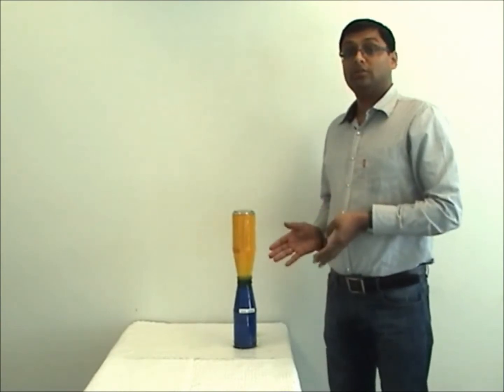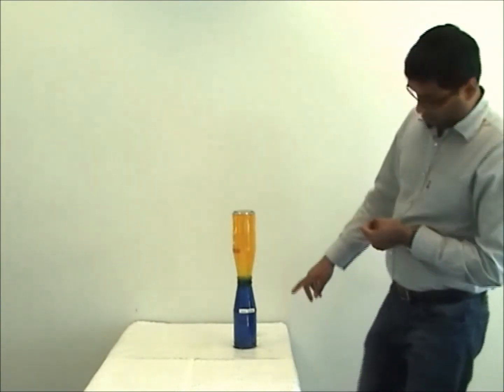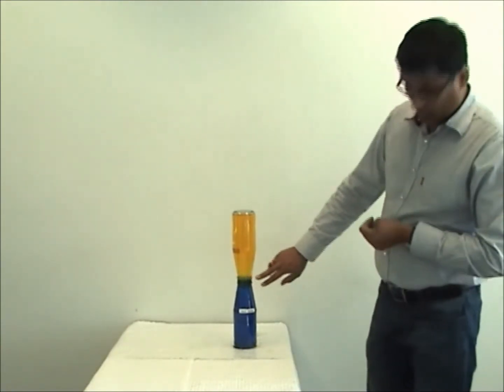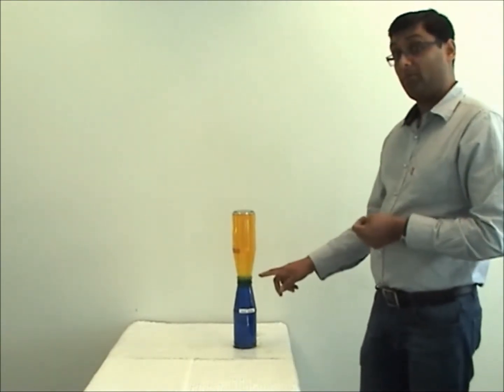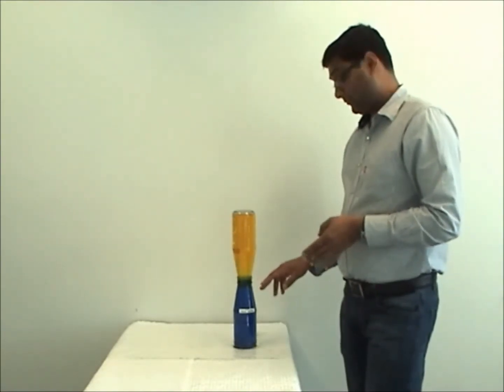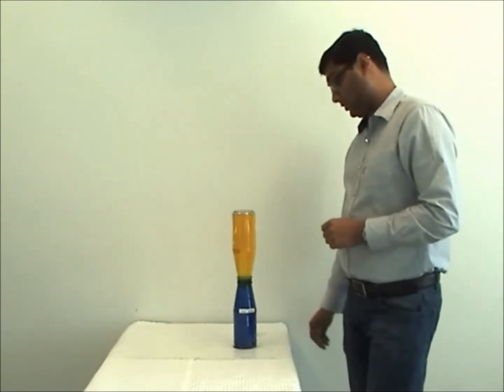As expected you can see the warm water this time does not mix with the cold water. But if you can see there's a thin layer where there's some mixing happening. That's because of diffusion of water molecules against the convective forces. So there's a little bit of diffusion going on.